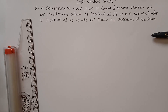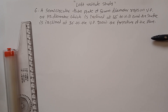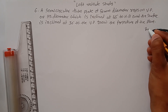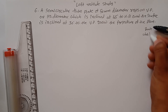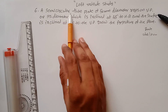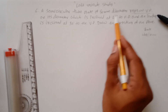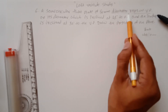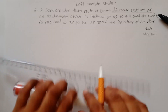Problem number six from projection of planes. The first step is to find out the shape of the plane and how it is resting. The shape is a semi-circular thin plate, resting on the VP on its diameter. These three data points are needed to complete the first position of the plane.